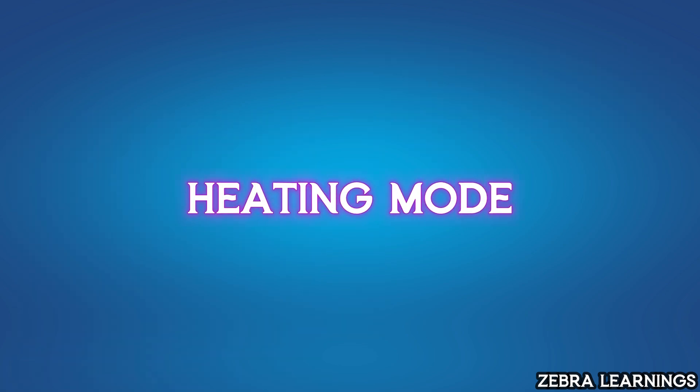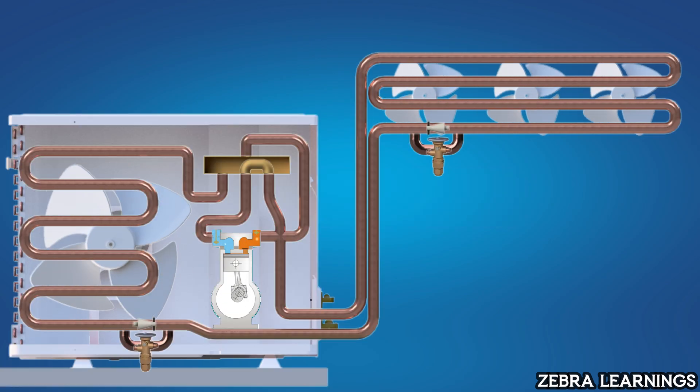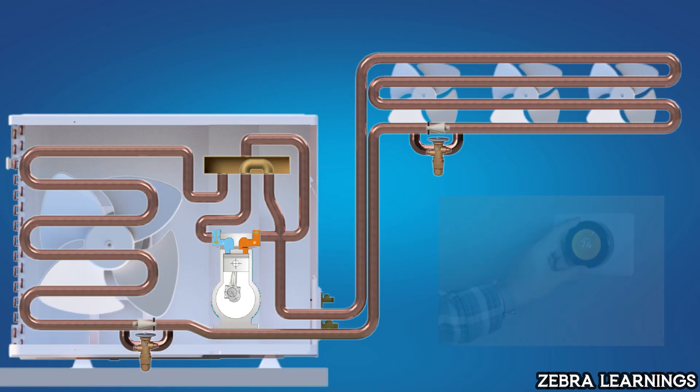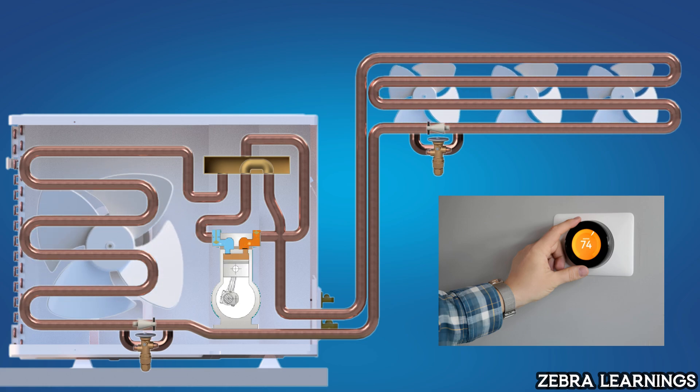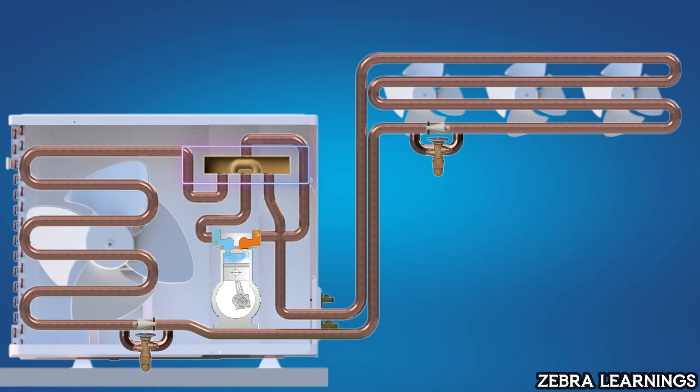Heating Mode. Now, let's see how the system works in heating mode. When the thermostat is set to heating mode, the solenoid in the reversing valve activates, switching the system to heating mode.